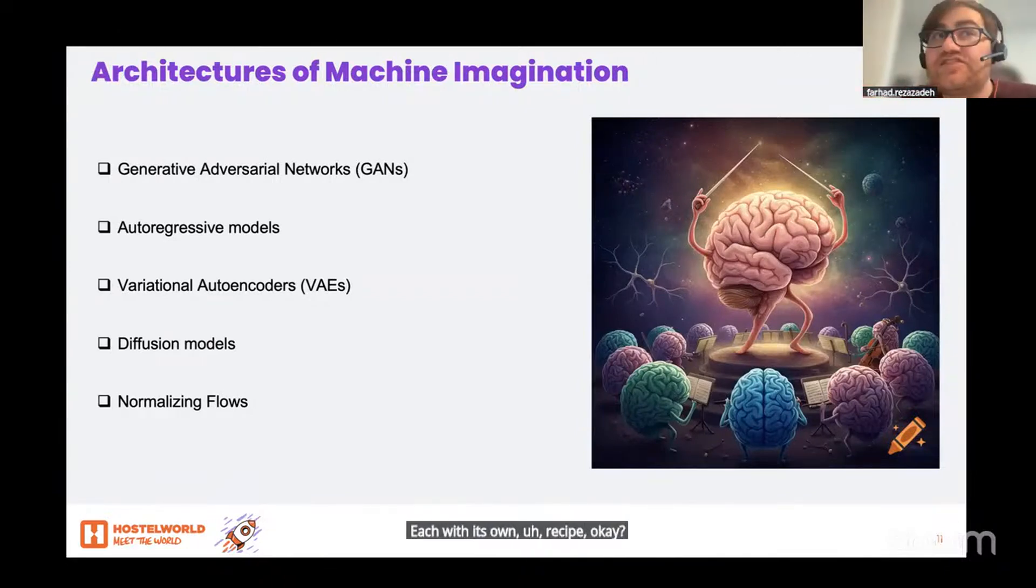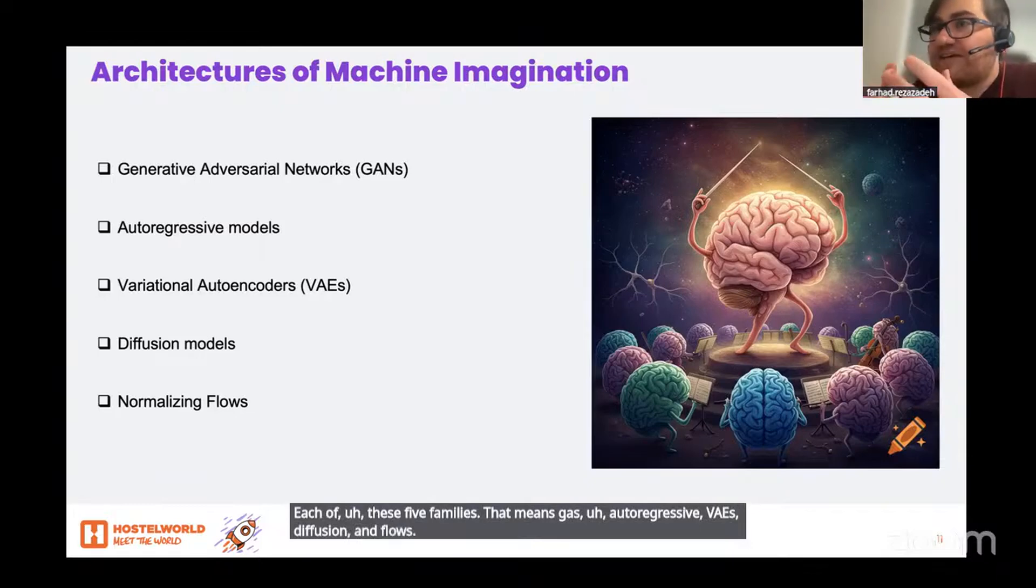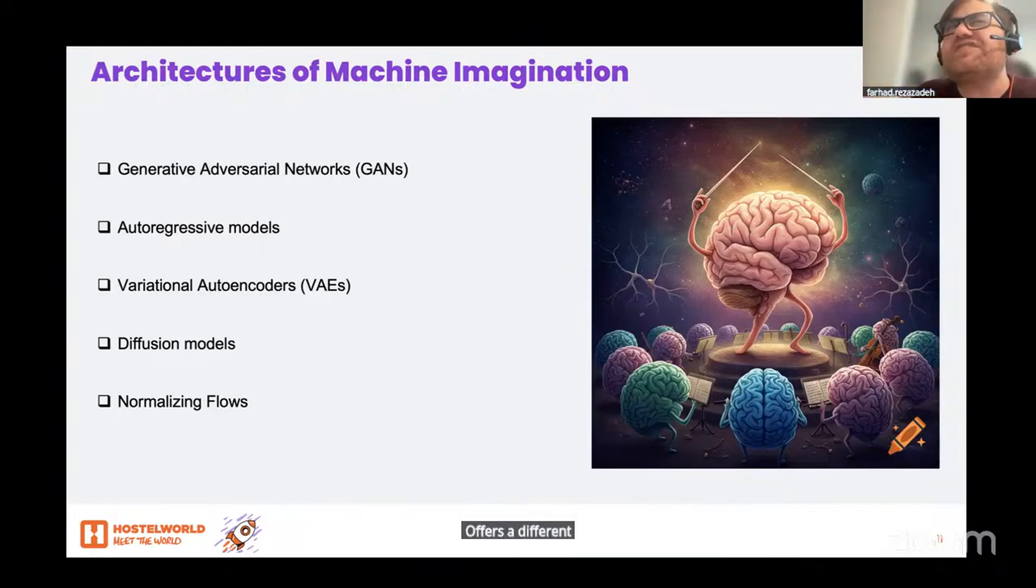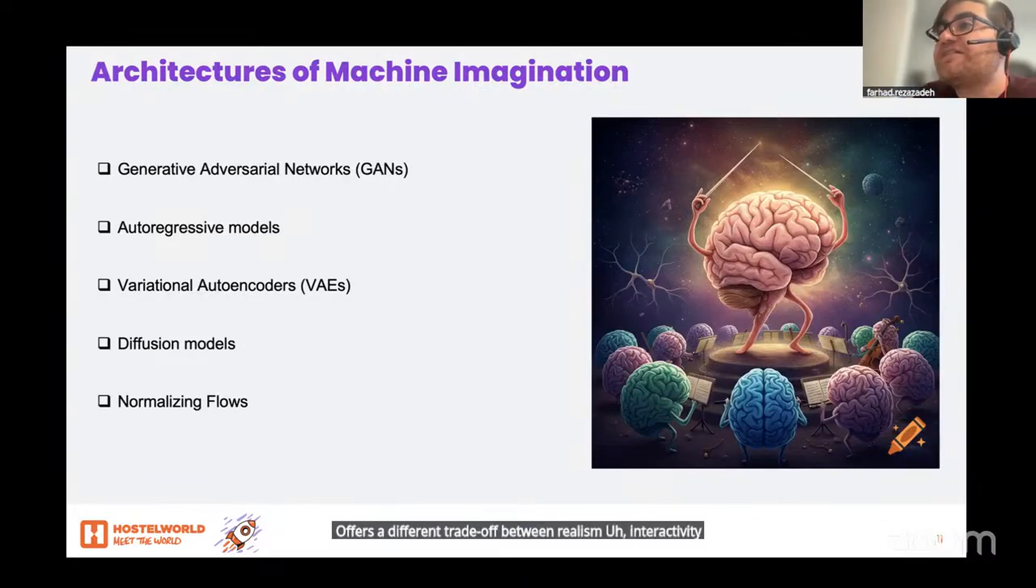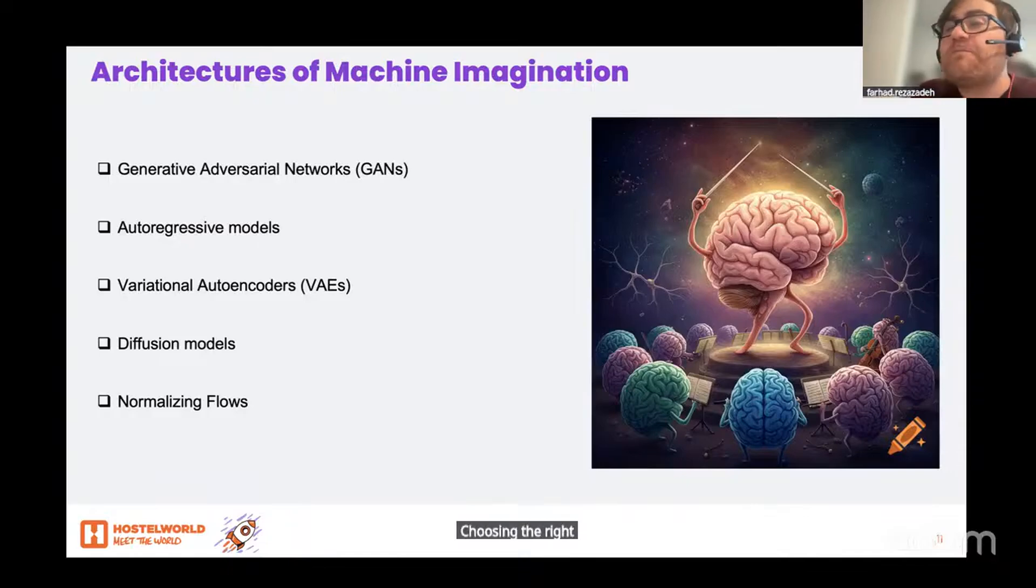Each of these five families—that means GANs, autoregressive, VAEs, diffusion, and flows—offers a different trade-off between realism, interactivity, speed, and mathematical rigor.